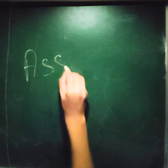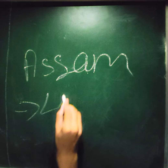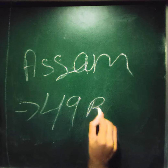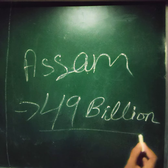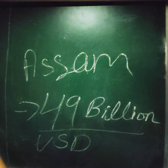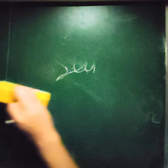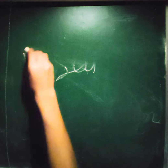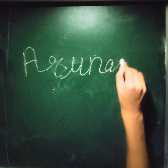The first state is Assam, with a GDP of 49 billion US dollars. The second state is Arunachal Pradesh.